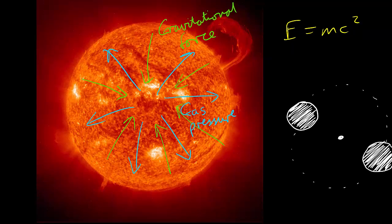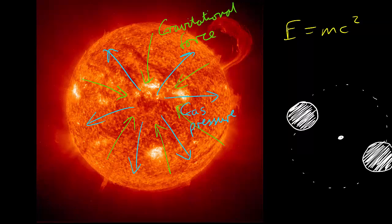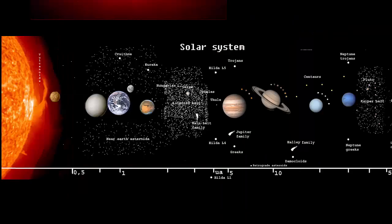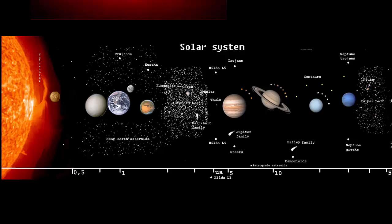Some stars exist in binary systems with another star. Their mutual gravitational attraction causes the two stars to orbit a common central point. A planetary system is a group of objects orbiting a star or indeed a binary star system due to gravitational attraction. We call our planetary system the solar system.